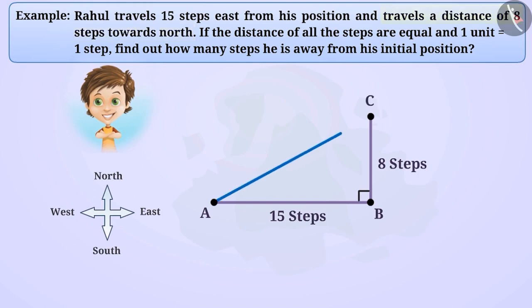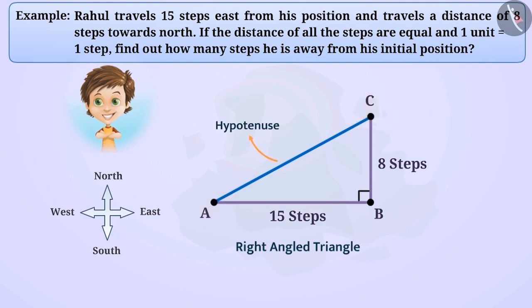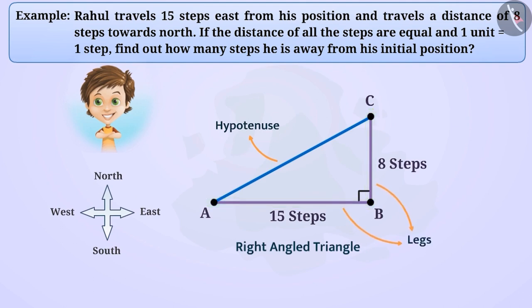We have to find the distance between A and C, which we show by the line segment AC. As you can see, a right-angle triangle has been formed here, in which side AC is the hypotenuse and sides AB and BC are the legs of this triangle.